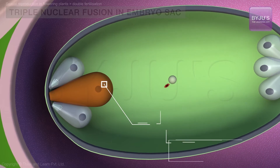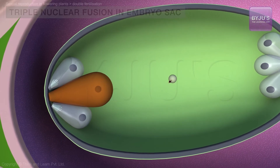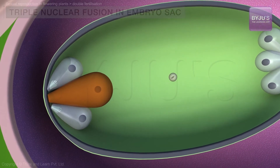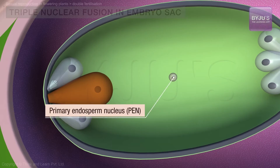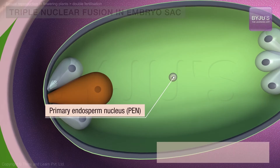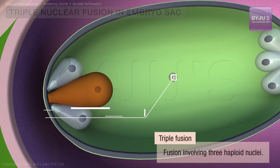The second male gamete fuses with the haploid polar nuclei to form a triploid cell, technically called the primary endosperm nucleus, or PEN for short. As three haploid nuclei are involved in this fusion, this process is also termed triple fusion.